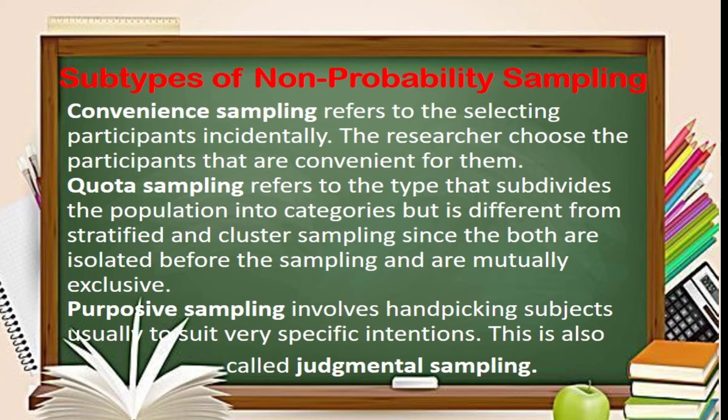There are different types of non-probability sampling. First, we have convenience sampling, also called accidental or incidental sampling. For example, a researcher intends to study the elementary students of a particular school and has determined the desired sample size. Due to the study's constraints, the elementary pupils who are present at the time of the researcher's visit to the school will be chosen as respondents.